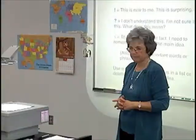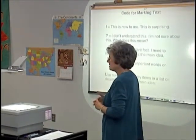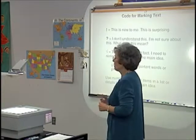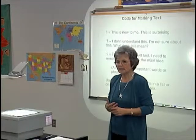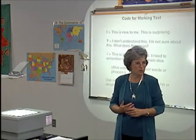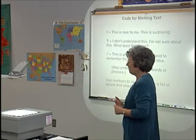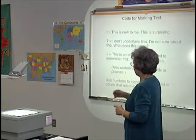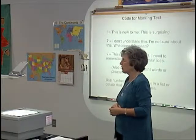Now here's the code. Let me first introduce what this code is about. It's a pretty simple one — it's just got three different kinds of marks. One way you can mark text is to put a little exclamation point next to something that you think is really new or maybe surprising. You know, like — wow, I didn't know that! — that's where you put the exclamation point.